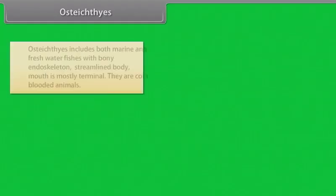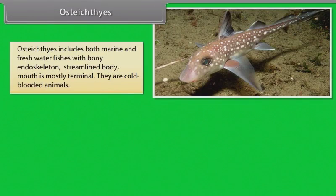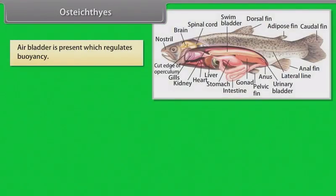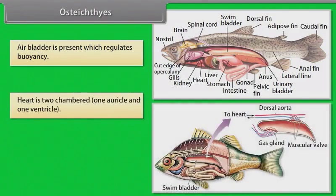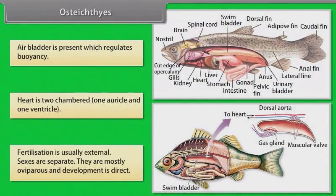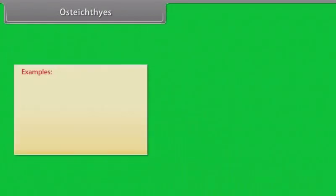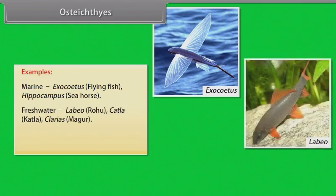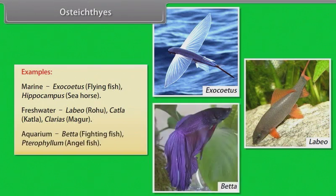Osteichthyes: Osteichthyes includes both marine and freshwater fishes with bony endoskeleton and streamlined body. Mouth is mostly terminal. They are cold-blooded animals. They have four pairs of gills, which are covered by an operculum on each side. Skin is covered with cycloid or ctenoid scales. Air bladder is present, which regulates buoyancy. Heart is two-chambered: one auricle and one ventricle. Fertilization is usually external. Sexes are separate. They are mostly oviparous and development is direct. Examples — Marine: Exocoetus (flying fish), Hippocampus (sea horse). Freshwater: Labeo (rohu), Catla. Aquarium: Betta (fighting fish), Pterophyllum (angel fish).